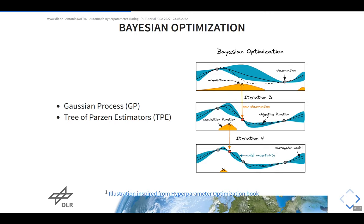The second component is the scheduler, or pruner, which decides how to allocate budget per trial. One simple but effective example from Google is the median pruner: at an intermediate evaluation step, you compare the performance of a trial to all intermediate results seen so far at that step. If it's worse than the median of the others, you discard it. This simple heuristic reduces the number of trials quite quickly.